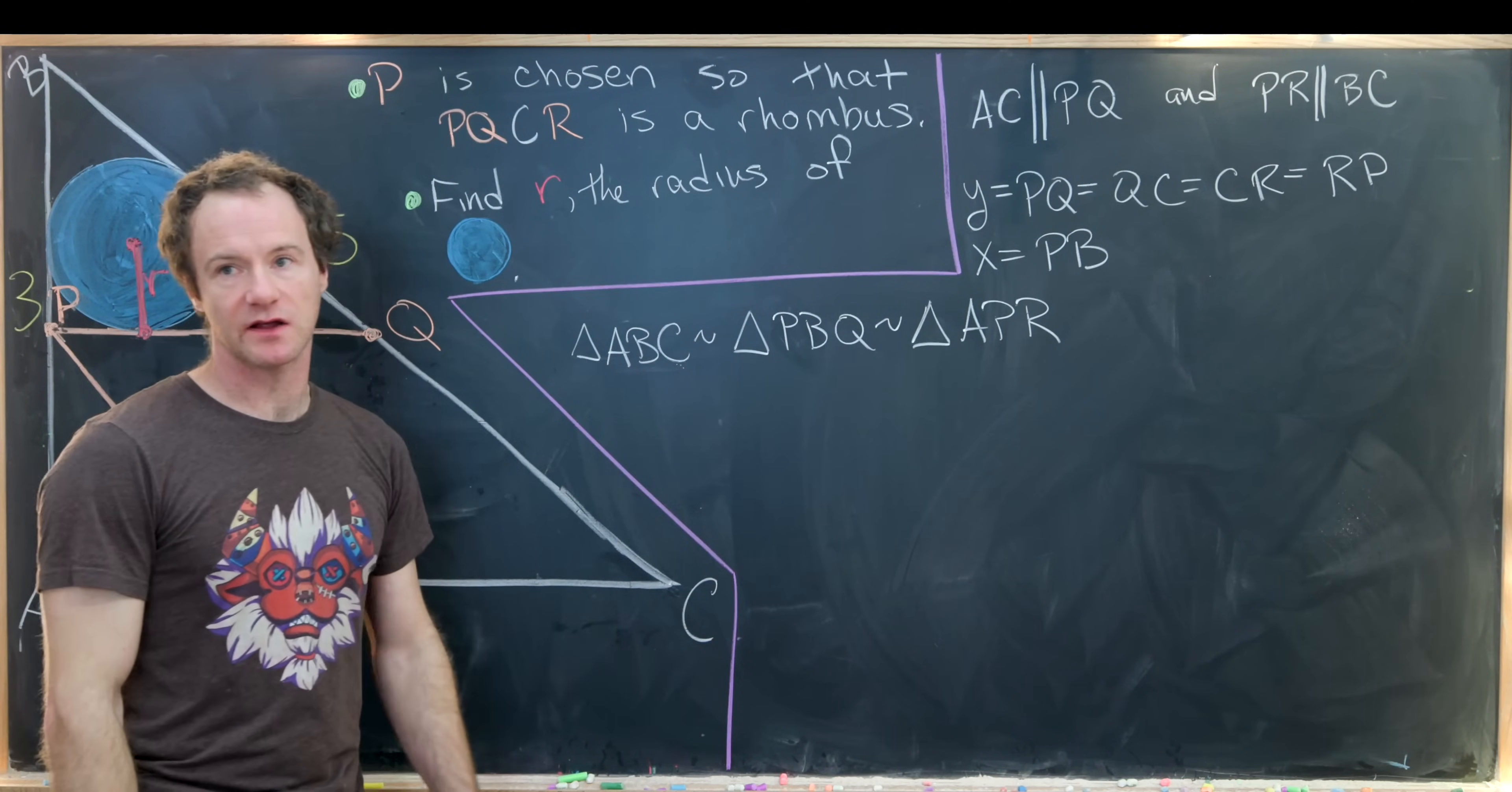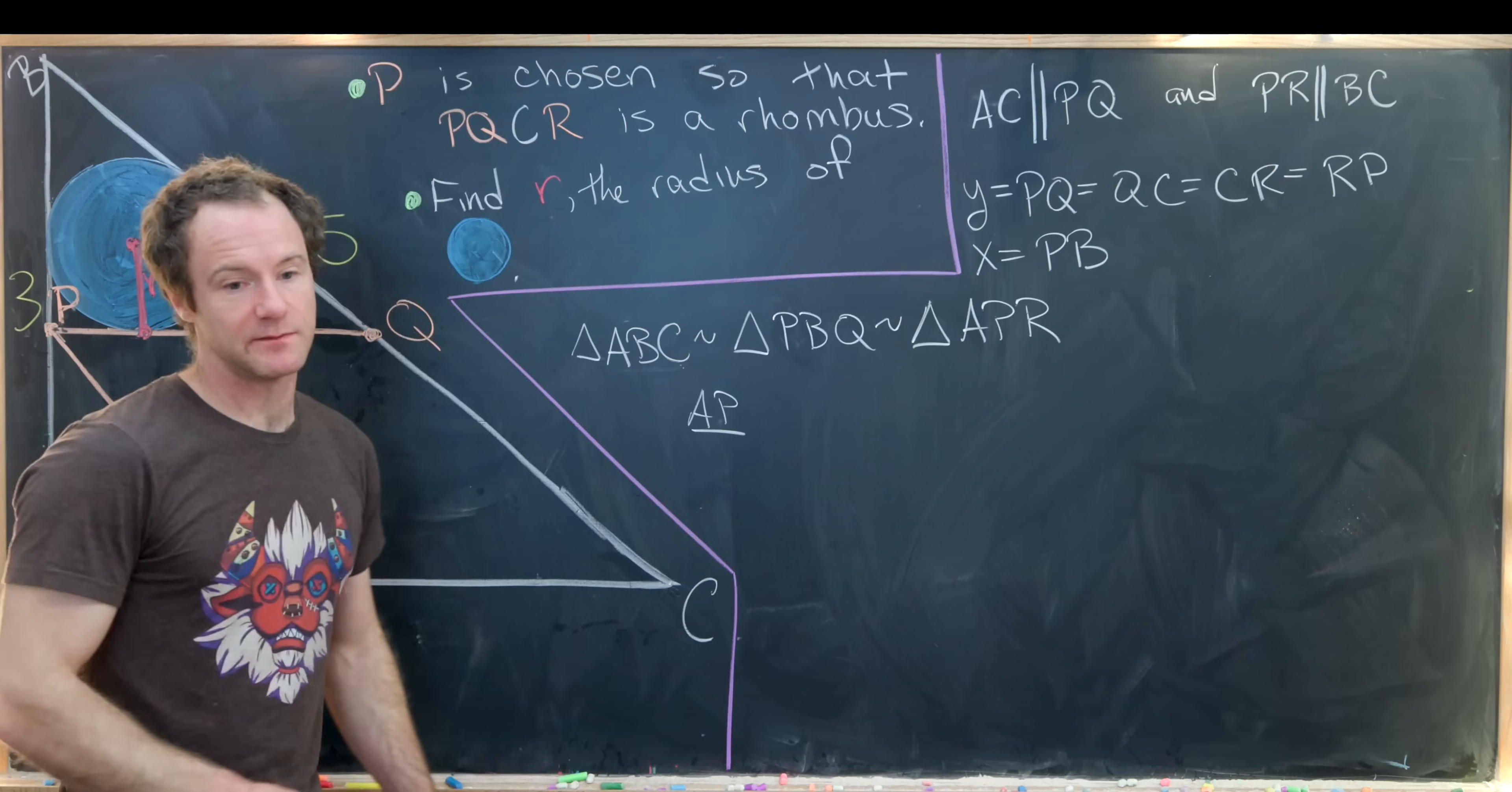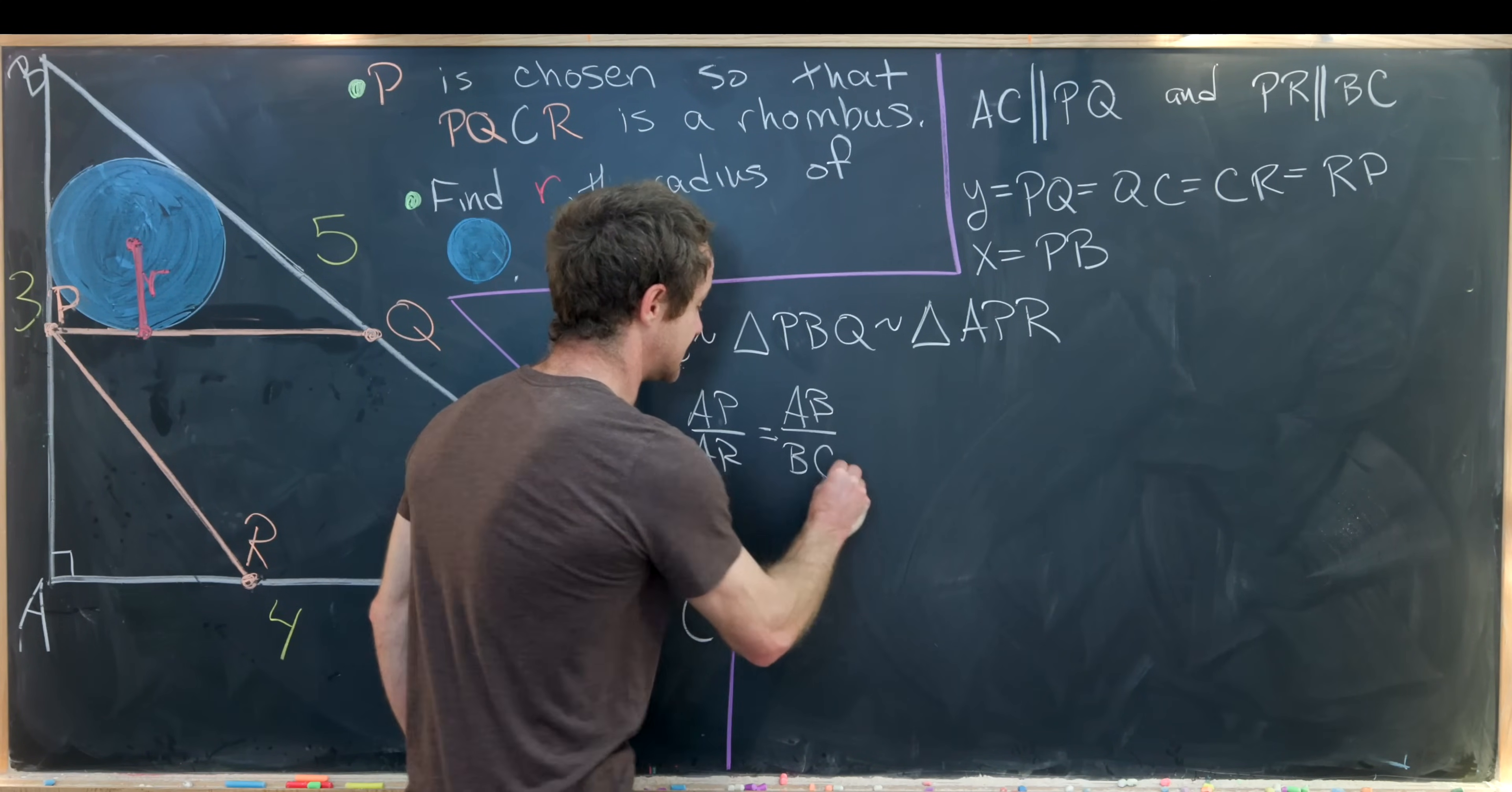Similar triangles have equal proportions of their appropriate side lengths. So let's make that application and see what that gives us. We know that AP divided by AR, that proportion of the side lengths happening in this triangle, will be equal to AB over BC.